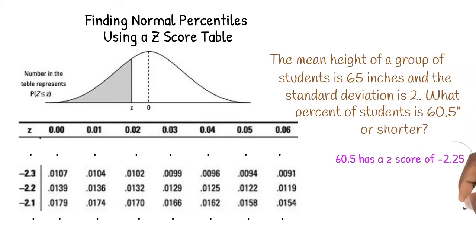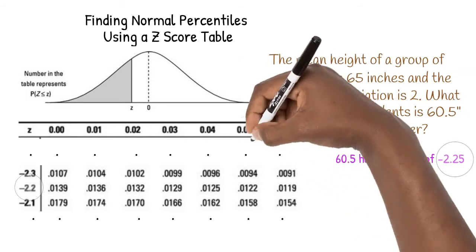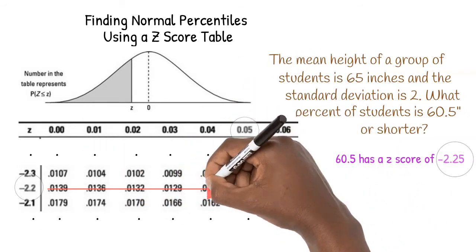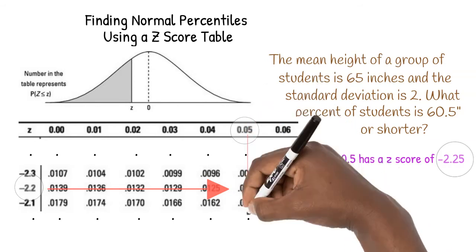Since 60.5 has a z-score of negative 2.25, we find negative 2.2 on the left side of the table and 0.05 at the top of the table. Then we look for the decimal in that row and that column.